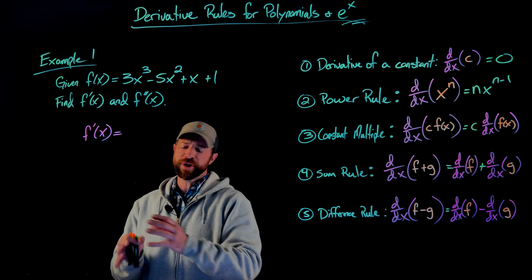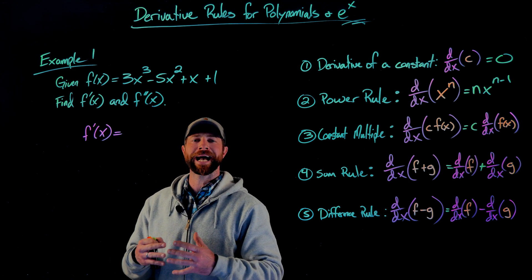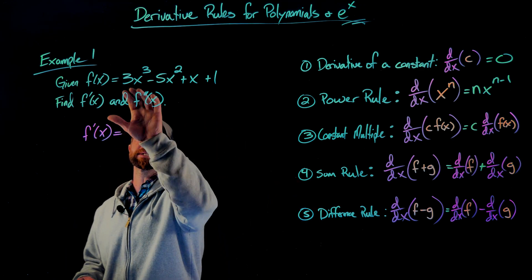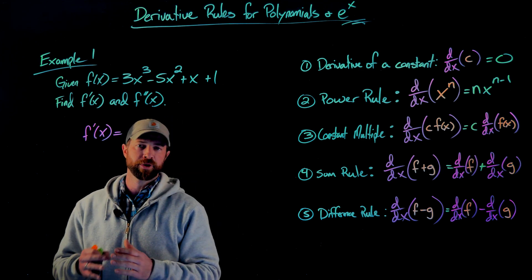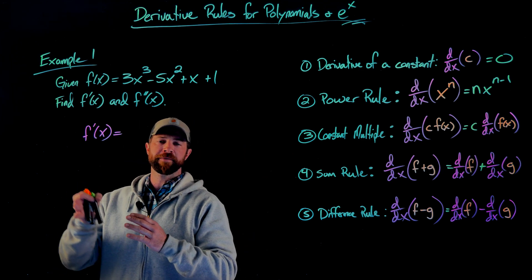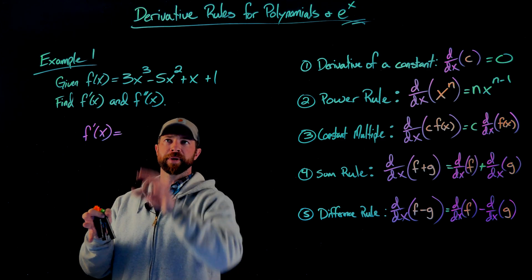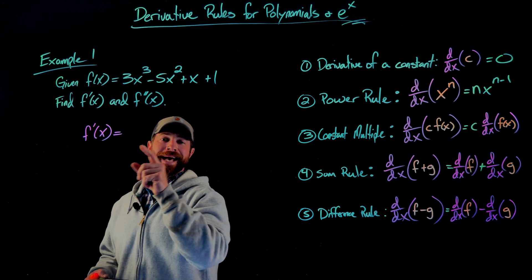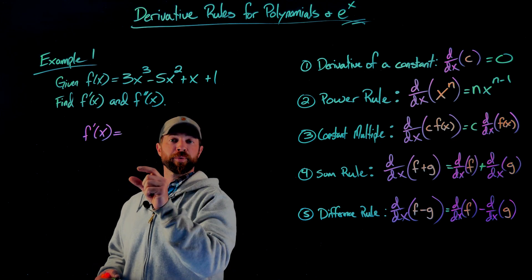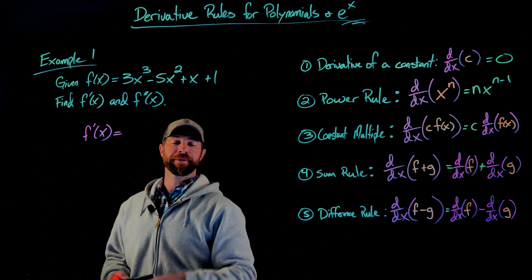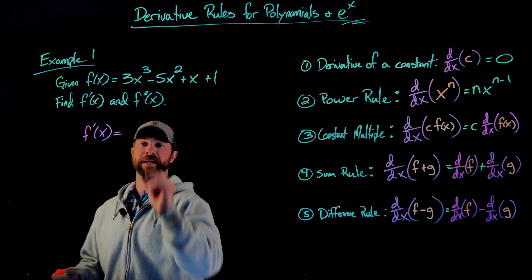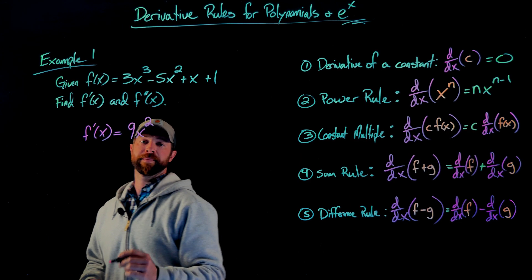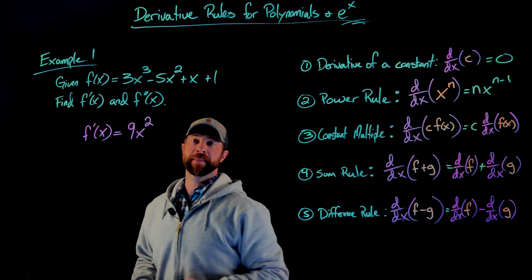I'm going to show you how you will use these rules all together. I can attack each term separately, so let's start with 3x cubed. The constant multiple rule says the 3 out front doesn't do anything — it gets multiplied by the derivative of x cubed. I bring the 3 down and multiply it by the 3 out front, giving 9x squared.